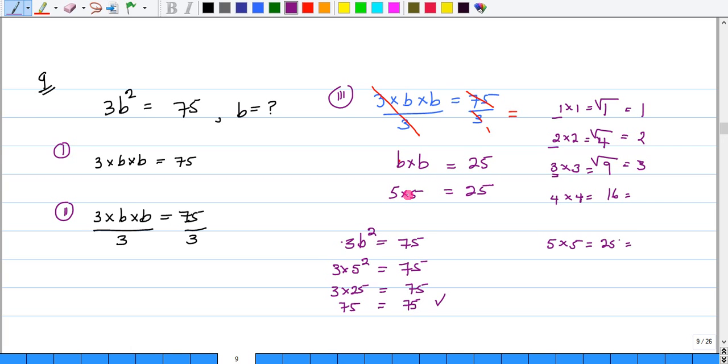Now, I would know already, based on our studies, that 5 times 5 is 25. Now, if they ask me to find b, then I only need one. So, my answer for number 9 is going to be 5. b is equal to 5.